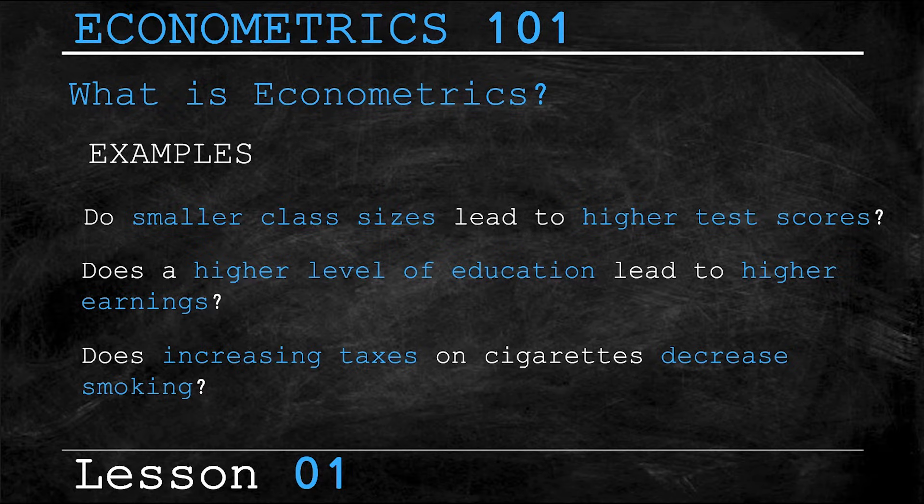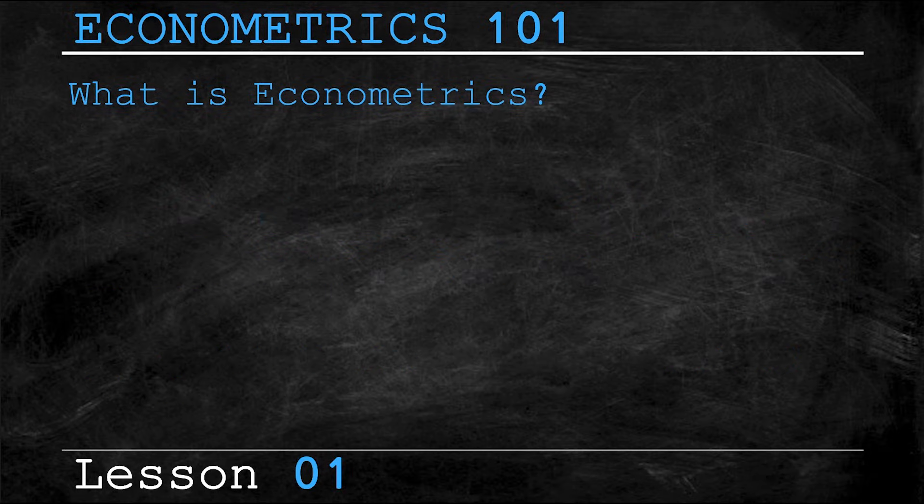recall from our earlier definition of econometrics: econometrics uses economic theory, mathematics, and statistics to quantify economic events and causal effects. In econometrics, we aren't interested in opinions, we're interested in quantifying data. And to quantify is to ask the question, how much?